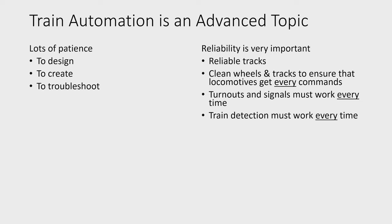If a turnout sometimes works and sometimes doesn't, you can easily get in trouble — maybe the turnout didn't shift the train to the right platform, so it hits another train that's there. The signals need to be very reliable, especially if you're using the stop section feature as safety to make sure that the train doesn't drive into another block. In the same fashion, train detection using sensors must work every time — if the control station doesn't know where the train is, then everything can go wrong.